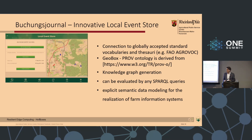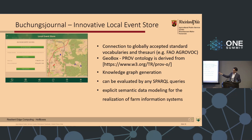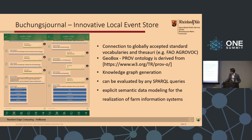What does the innovative local event store mean? Our innovative local event store — called Booking Journal — has a link to internationally accepted standard vocabularies. We are using the ontology from the W3C and the vocabularies from the Food and Agriculture Organization, enabling knowledge graph generation. These Buchungsjournals can be evaluated by any SPARQL queries, and provide explicit semantic data modeling for the realization of farm information systems. Behind the interface, in our chatbot, queries are performed automatically in our Booking Journal.